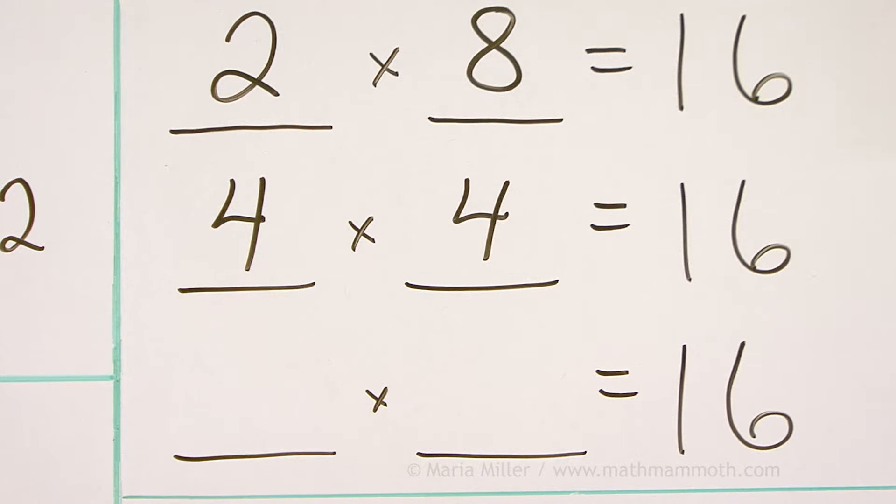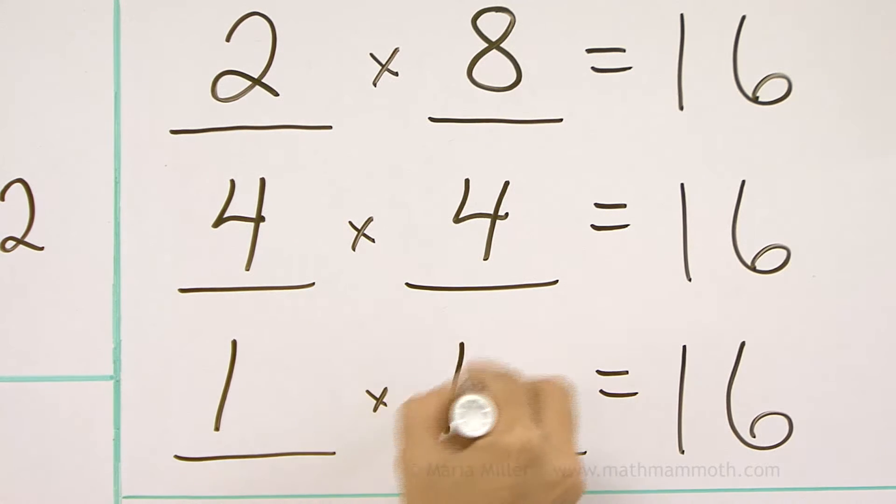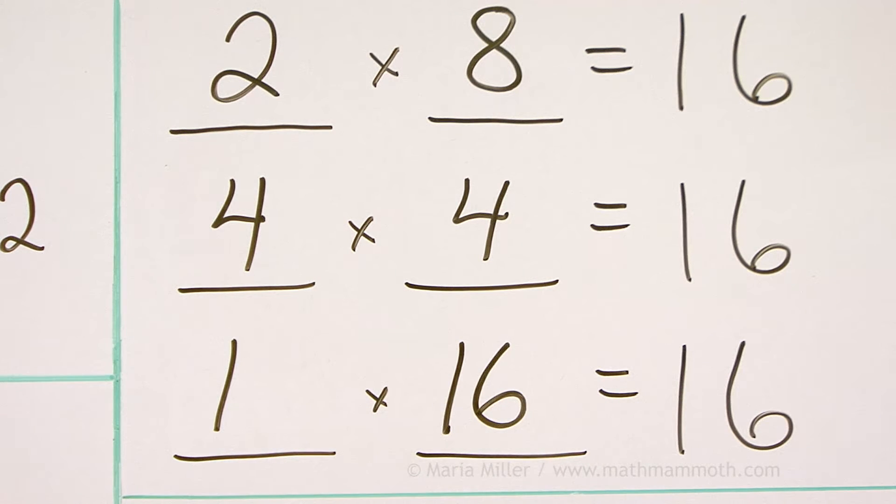There's always the 1 times the number itself. 1 times 16 equals 16.